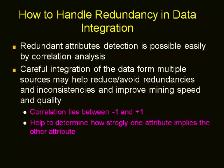Correlation analysis is useful in detecting possible redundancies. Careful integration of data from multiple sources can help reduce or avoid redundancies and inconsistencies, which ultimately improves the mining quality and speed — that is, the performance of mining gets improved. Correlation tells us how one attribute relates to another, and how it is useful in detecting redundant attributes.